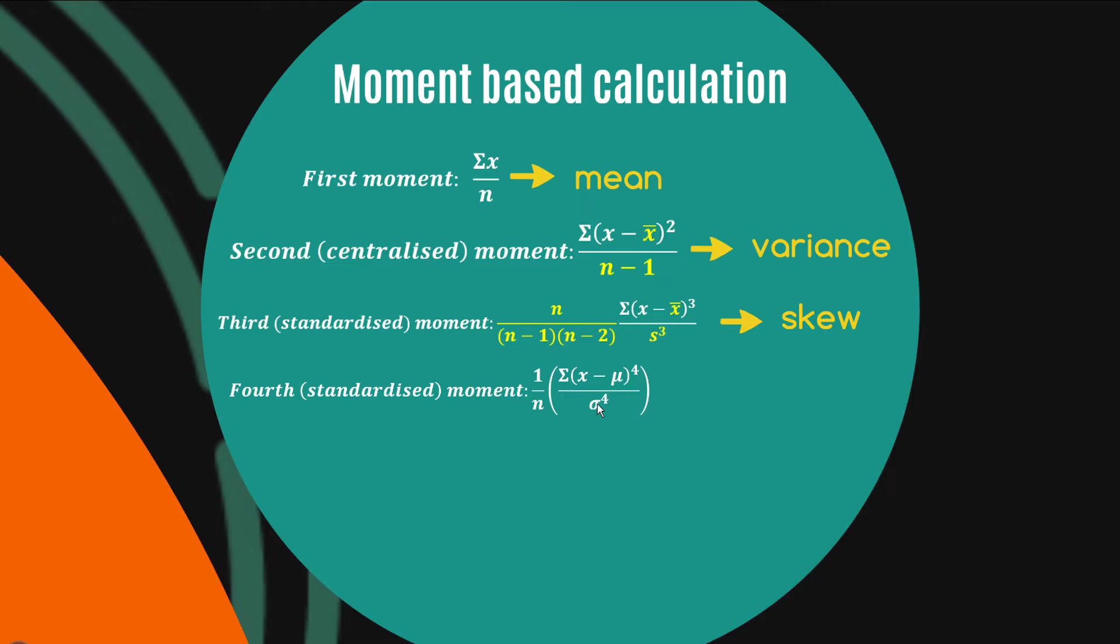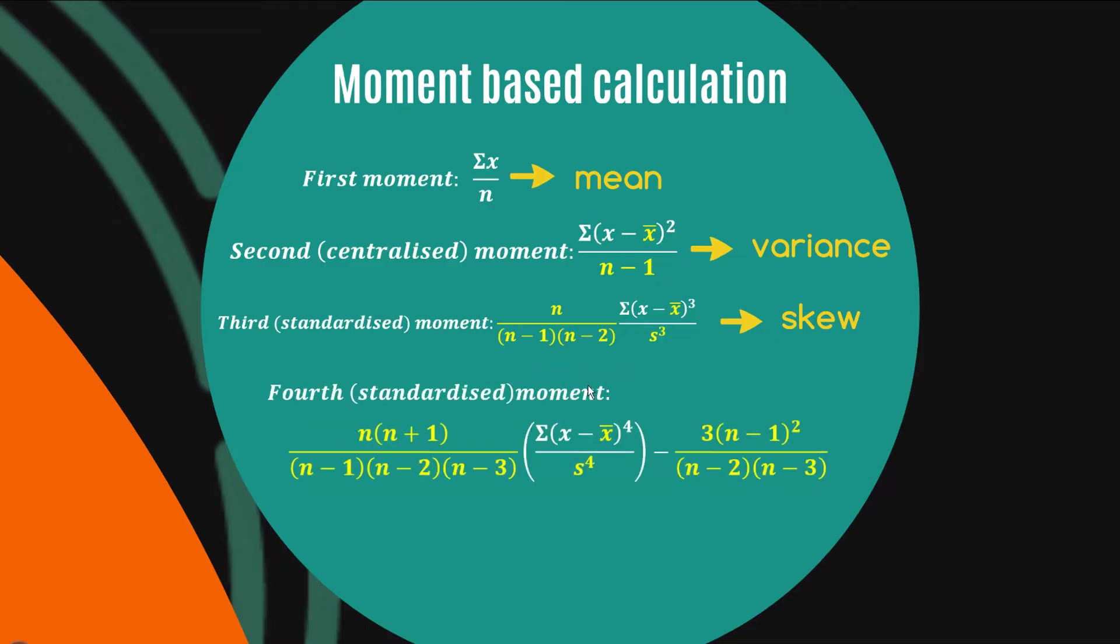Now it looks a bit grosser in the skew formula. We have x̄, we also have s estimating σ in this equation, so we had to adjust for the fact that we're using a sample as opposed to the population. And the adjustment was a little bit more confusing—we had n over (n-1) times (n-2)—but that is the equation that will provide you an estimate of the skew from your sample. Now guess what's going to happen here. We've got μ and σ and we want to change that into x̄ and s. Well, no surprise, it's gonna get ugly peeps. Are you ready for this?